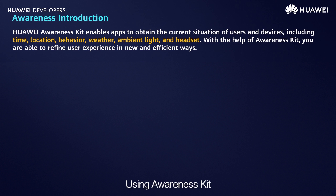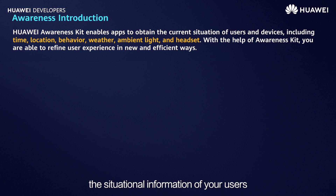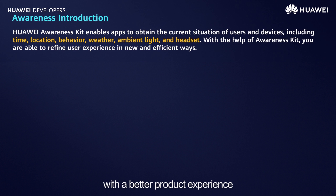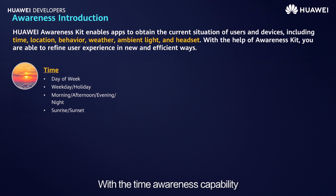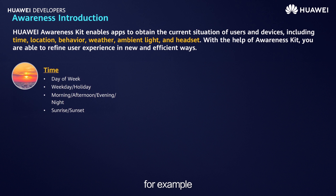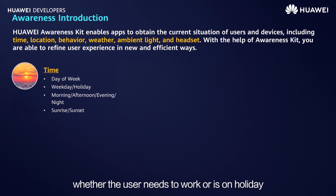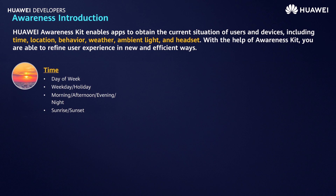Using Awareness Kit, your apps can better perceive the situational information of your users, helping you provide them with a better product experience. With the Time Awareness Capability, Awareness Kit tells you the current time of a user — for example, the day of the week, whether the user needs to work or is on holiday, and whether the current time is in the morning, noon, evening, or late at night.